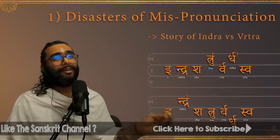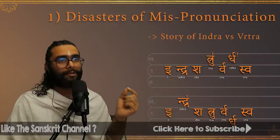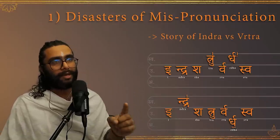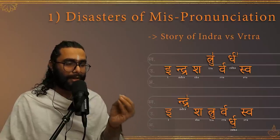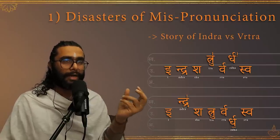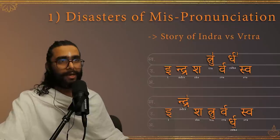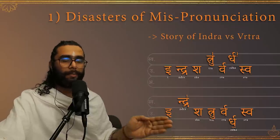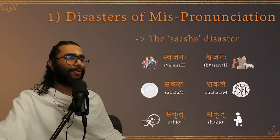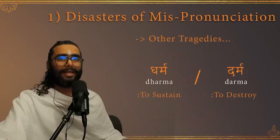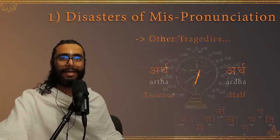He was very clear with the varnas, with the ucharana of every varna, but the swara went wrong. So there is swara — which is the tone — and there is varna — which is the letter itself, the letter of the alphabet, which is why the alphabet is called Varna Mala. Swaras and varnas both need to be proper when chanting Veda mantras, especially. Hopefully, the importance of shuddha ucharana has been drilled enough.